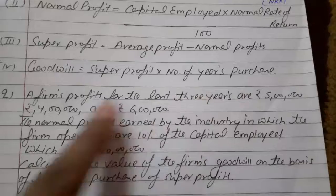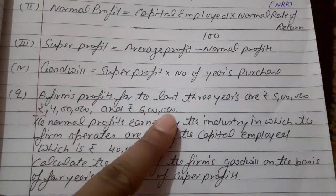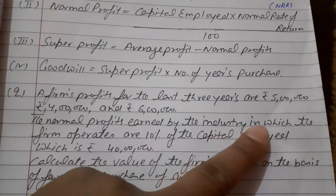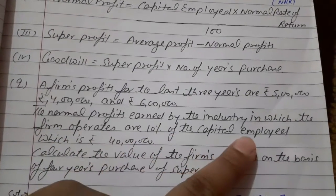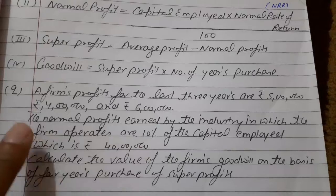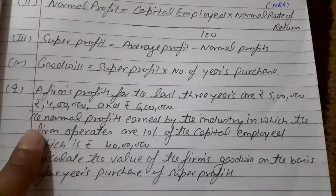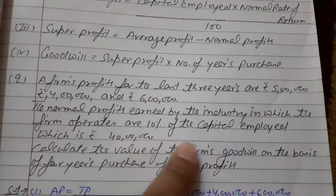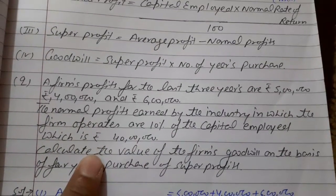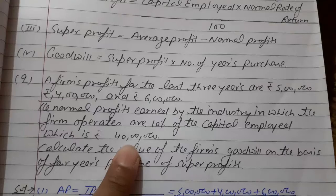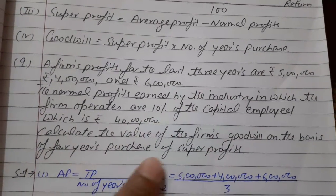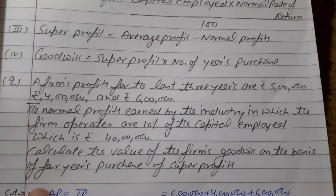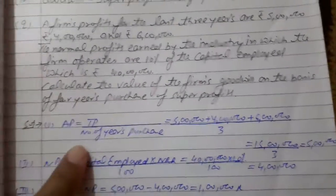Numerical question: suppose a firm's profits for the last three years are 5 lakh, 4 lakh, and 6 lakh. The normal profit earned by the industry in which the firm operates is 10% of the capital employed, which is 40 lakh rupees — meaning the firm assumes that if it earns even 10% on its 40 lakh investment, that will be the normal rate of return. Calculate the value of the firm's goodwill on the basis of 4 years' purchase of super profit.